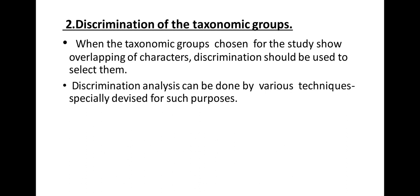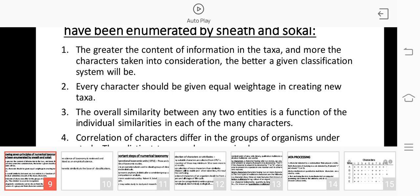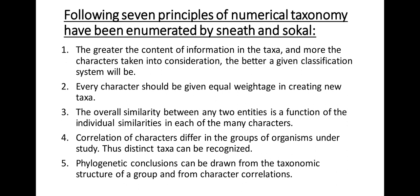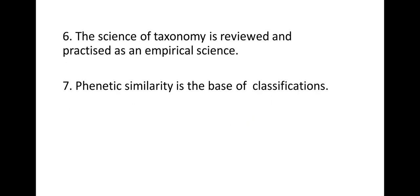Second, discrimination of the taxonomic groups: if the taxonomy groups chosen for study show overlapping of characters, discrimination analysis should be used, using various techniques specifically devised for this purpose. The following seven principles of numerical taxonomy have been enumerated: the greater the content of information in the taxa and the more characters taken into consideration, the better the classification. Every character should be given equal weightage. Overall similarity between two entities is a function of individual similarities across many characters. Correlation of characters differs among organism groups. Phylogenetic conclusions can be drawn from taxonomic structure and character correlations. Taxonomy is practiced as an empirical science. Phenetic similarity is the base of classification.